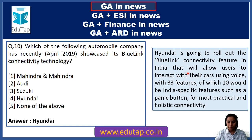Question 32: The Indian Navy has recently signed an MOU with which of the following organizations to undertake joint research? The answer is CSIR — the Council of Scientific and Industrial Research. This memorandum was signed between the Indian Navy and CSIR for the development of advanced technologies.